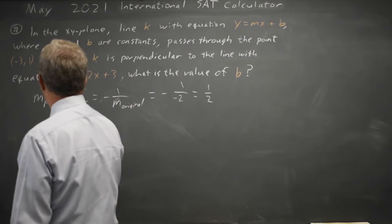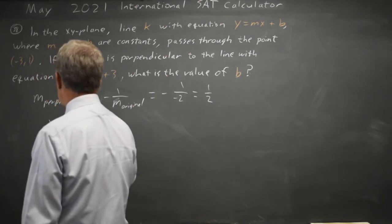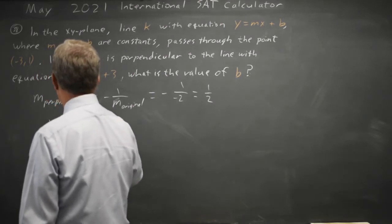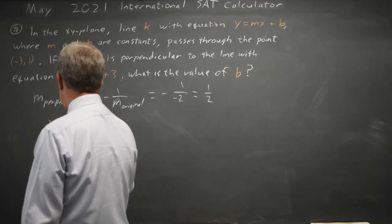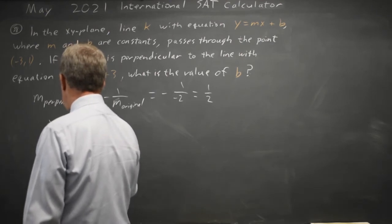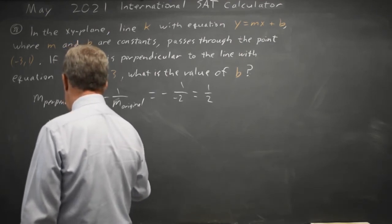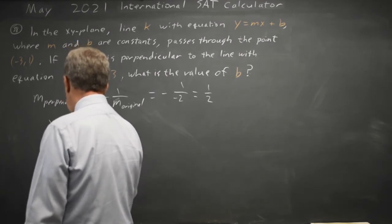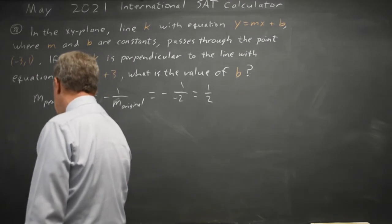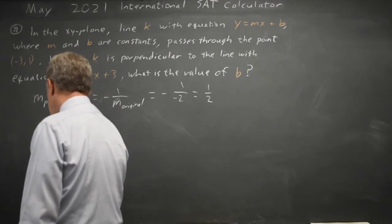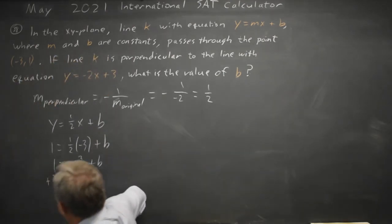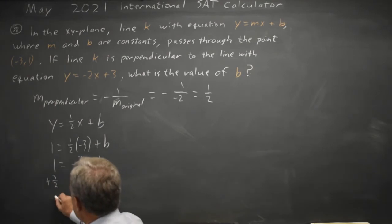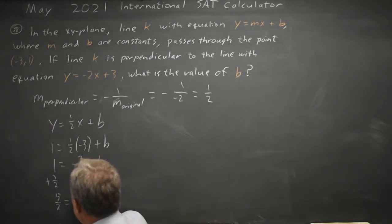So 1 equals 1 half times negative 3 plus b. That gives us 1 equals negative 3 halves plus b. Adding 3 halves to both sides: 1 is 2 halves, and 2 halves plus 3 halves is 5 halves, so b equals 5 halves.